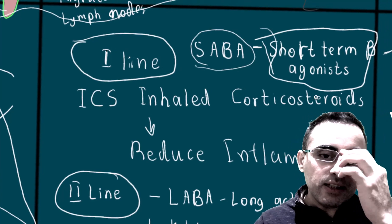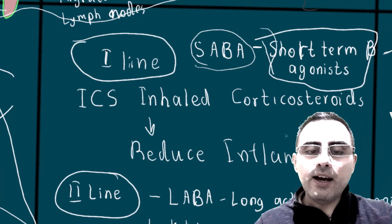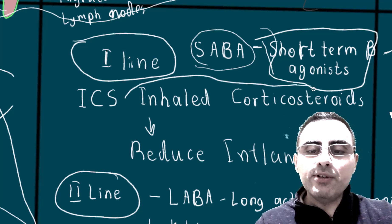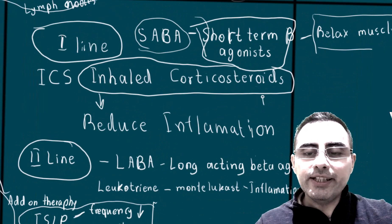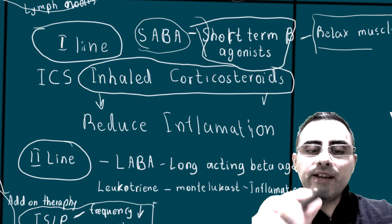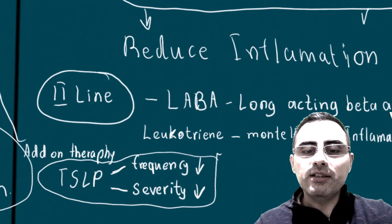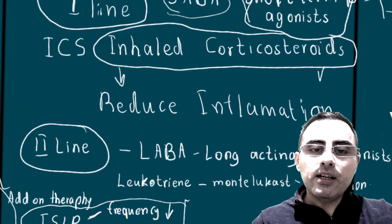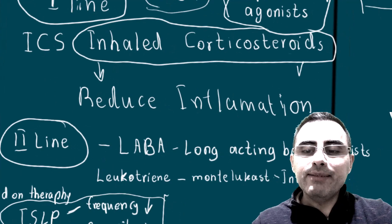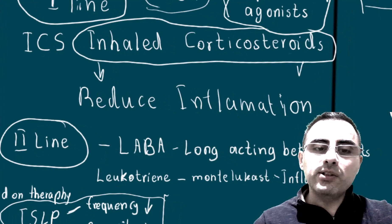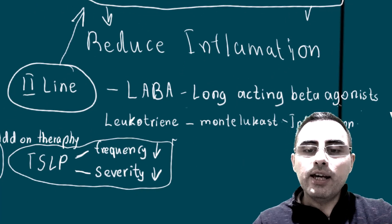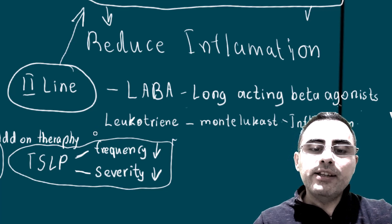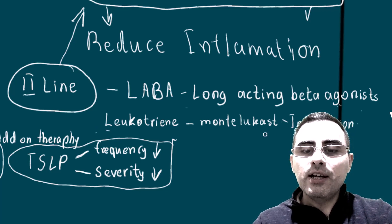Another first-line treatment is inhaled corticosteroids, which reduce inflammation. If this treatment is not enough and symptoms persist, second-line treatments are used: long-acting beta agonists (LABAs) and leukotriene modifiers such as montelukast, which also reduces inflammation.